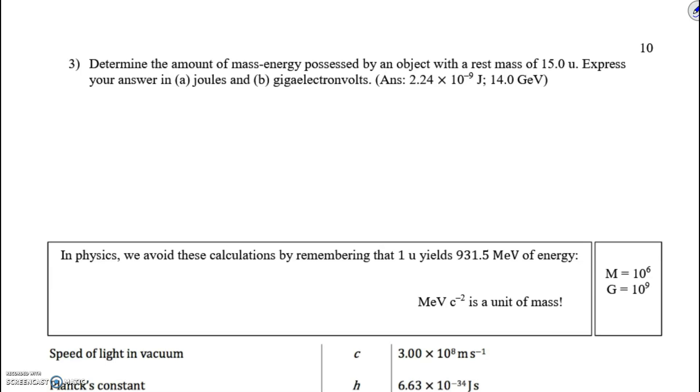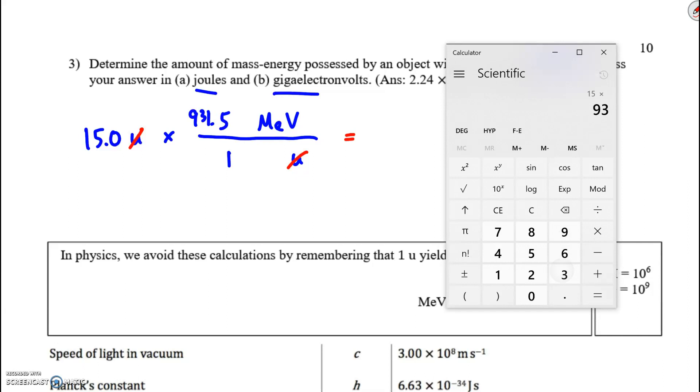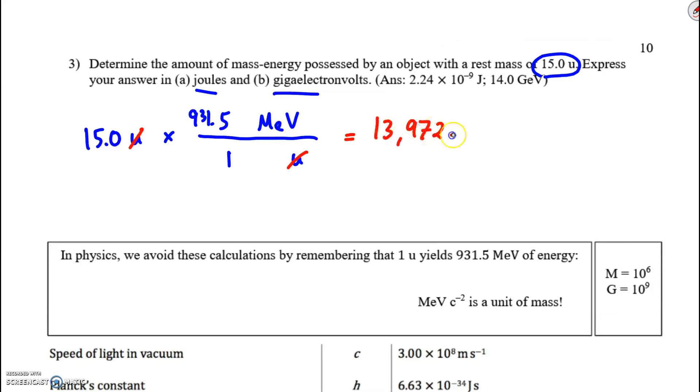Number 3. Determine the amount of mass energy possessed by something with 15u. Express your answer in joules and gigaelectronvolts. Well, here's what I want to do. I want to say 15u. I can convert straight from u into megaelectronvolts. 1u is equal to 931.5 megaelectronvolts. I cancel out the u. When I multiply this out, what's 15 times 931.5? 13972.5 megaelectronvolts.